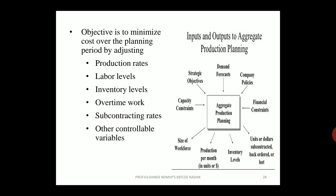The basic objective of Aggregate Production Planning is to minimize cost over the planning period by adjusting the following parameters: production rate, labor level, inventory levels, overtime work, subcontracting rates, and other controllable variables. By adjusting all these parameters, you can minimize cost over the planning period.